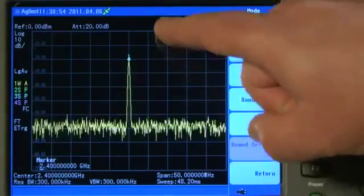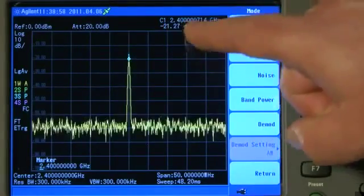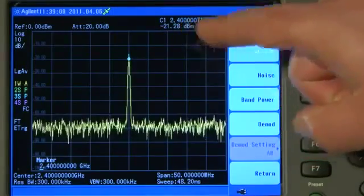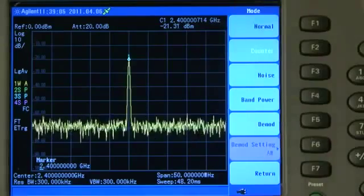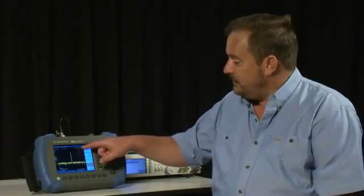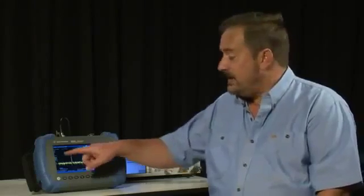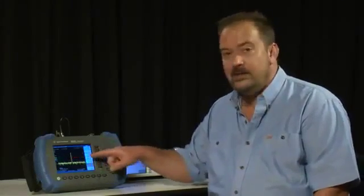And you can now see that with the counter active, the marker is now called C1 instead of M1, and it is measuring the frequency being 2.40000714 or 715 GHz. Unlike a standalone frequency counter instrument that can only measure one frequency at a time, this of course can be used to measure any frequency within a spectrum of carriers. You just line the marker up with whichever signal you wish, and it will apply the frequency counter to that carrier.